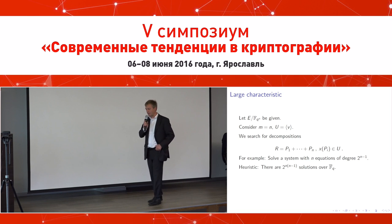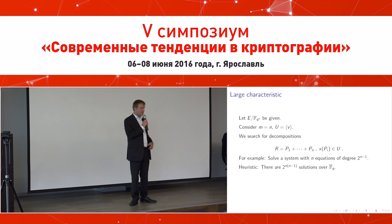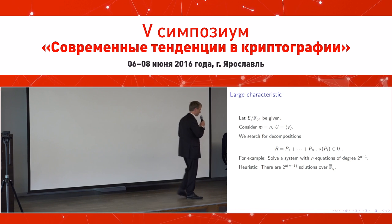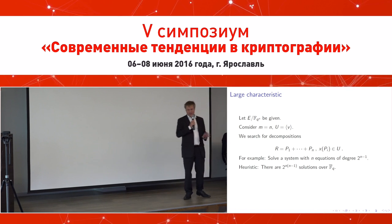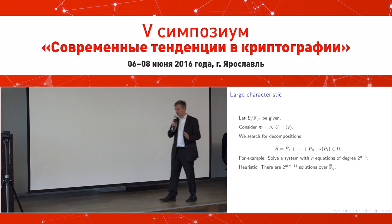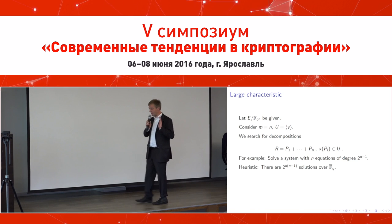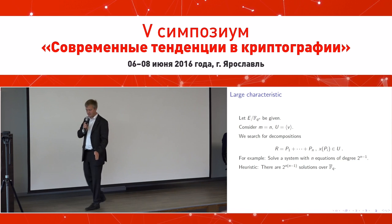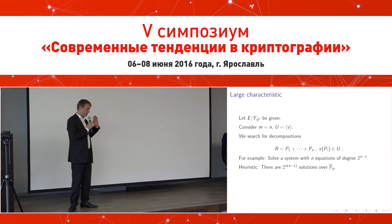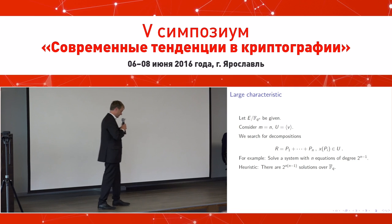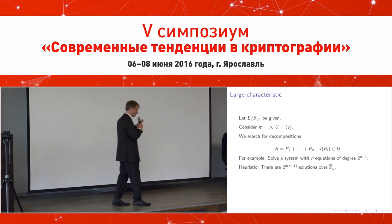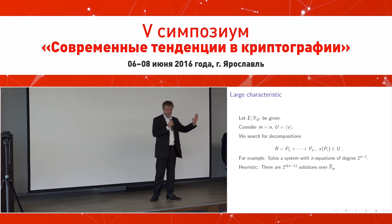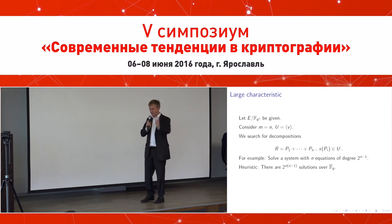In large characteristic, field equations are not useful. Consider the special case of an elliptic curve over F_q^n, and restrict the X coordinates of a point to just a line. Using summation polynomials, the complexity will be something like 2^(n²).